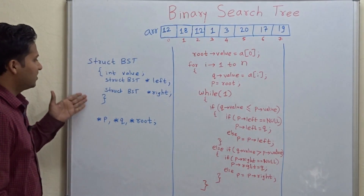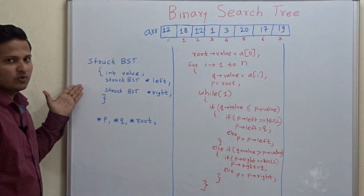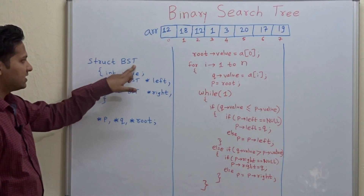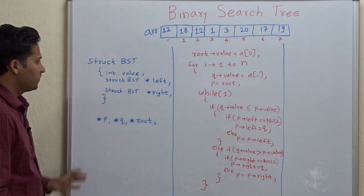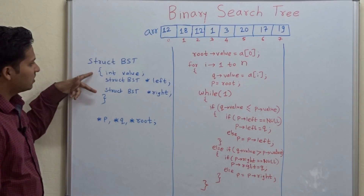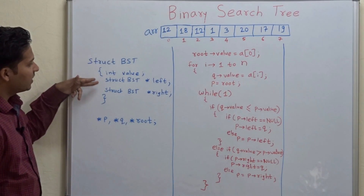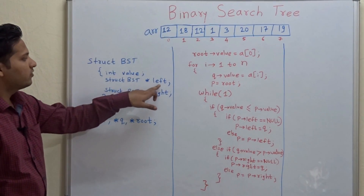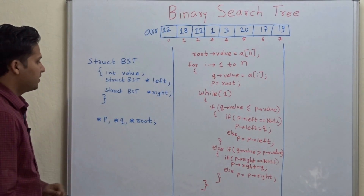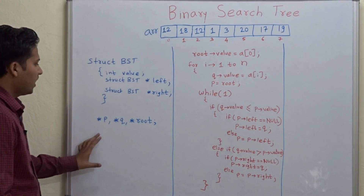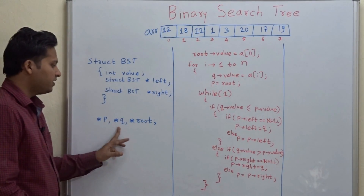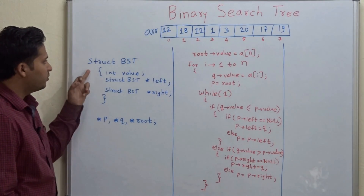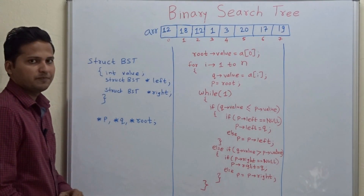This is the structure for our program. The name of the structure is BST — binary search tree — and inside the structure there are three variables: one is value, then a left pointer and the right pointer. These are three pointer variables of the data type struct BST.